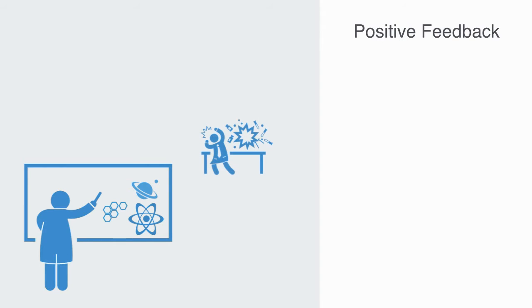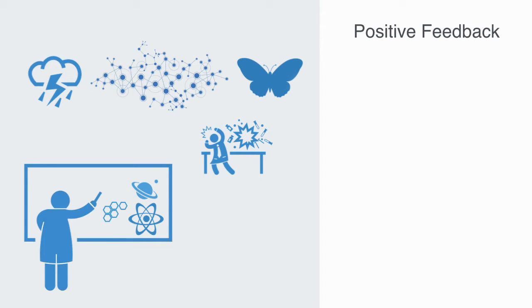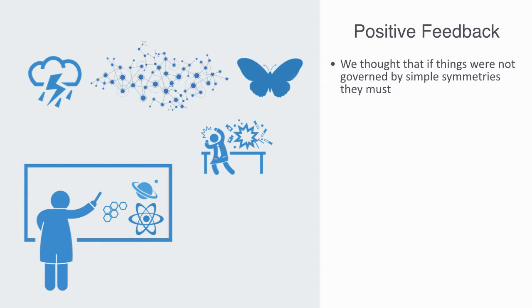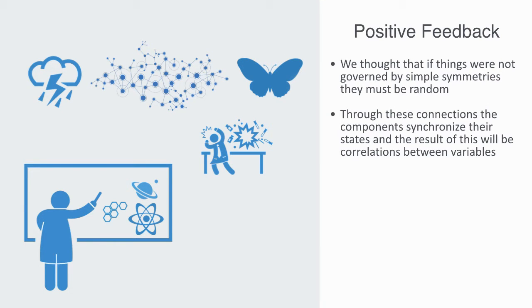From chaos theory to network theory, complexity science has taught us that these complex systems we once thought were random are in fact certainly not — we just didn't have the tools to model them. We had linear models to describe simple interactions. We thought that if things weren't governed by simple symmetries, they must be random, for which we use stochastic modeling. In order to get randomness, by definition, the variables have to be independent — that is, no connection or correlation between them. Complex systems are by all definitions highly interconnected, and through these connections the components synchronize their states, resulting in correlations between the variables, meaning the system is not random.